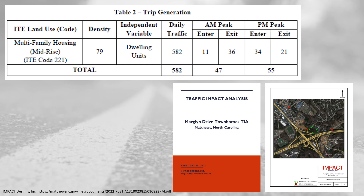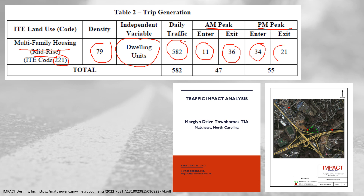Here's an example of trip generation for a development of 79 townhomes, using dwelling units as the independent variable. The land use code is 221 for multifamily housing mid-rise. The total daily traffic is estimated at 582 trips. In the morning peak hour, the estimate is 11 vehicles entering and 36 exiting — as expected, more people leave in the morning. In the afternoon, 34 vehicles are entering versus 21 exiting. Overall, 47 trips are generated in the AM peak and 55 in the PM peak hour.